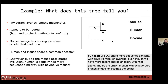What I want you to appreciate is that this leads to challenges. When you do a tree, you can mistakenly think that human and bovine — because they share more sequence similarity — are actually ancestral. You have to be very careful looking out for things where accelerated evolution is occurring in a lineage; it can cause some challenges.